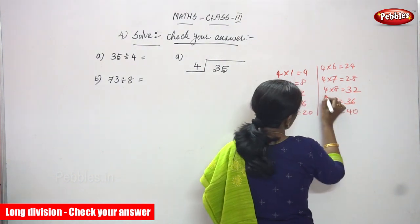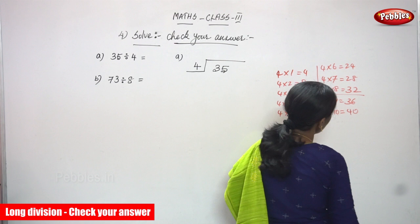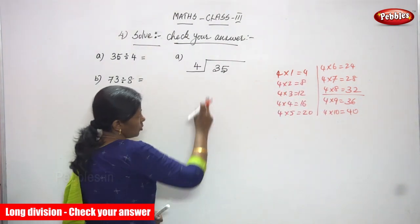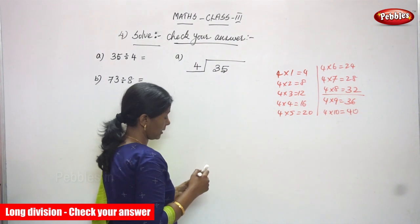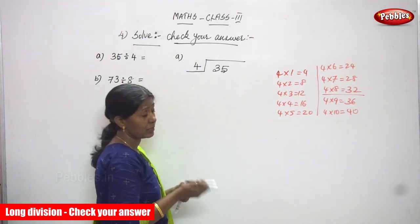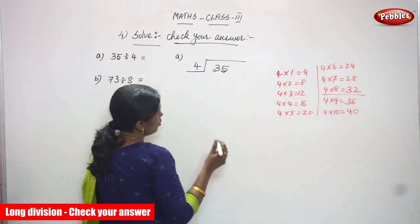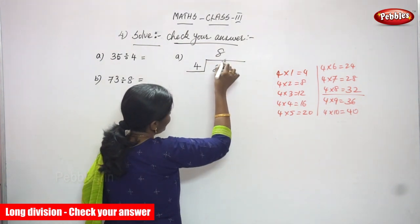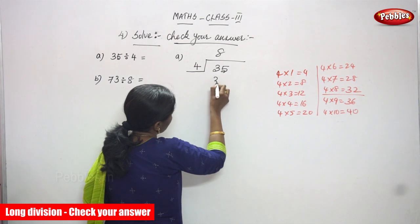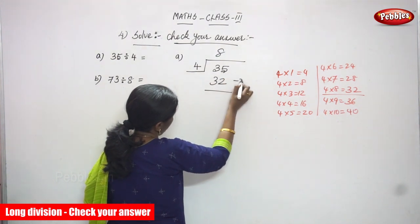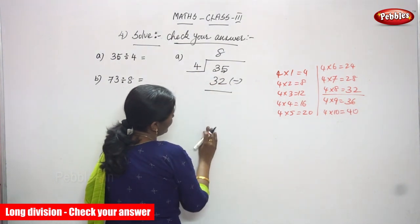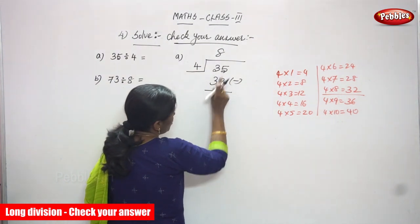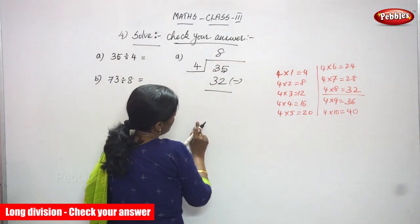You must stop at 4 eights are 32, because the dividend is 35. You have to write the number less than the dividend — 4 eights are 32 — so you write 8 in the quotient place, on top. And you write 32 below the dividend. It is also less than the dividend. So you are going to subtract.